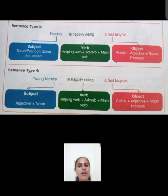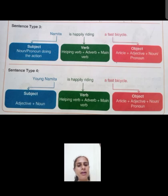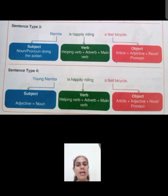Sentence type four: Young Namita is happily riding a fast bicycle. Subject part mein humne modification kiya hai — 'young' adjective add kiya hai Namita se pehle. Verb and object part same hai. Is tarah se humne char tarah ke sentence structures ki examples ke saath practice ki. Aap bhi in four sentence type structures ko follow kar sakte ho.